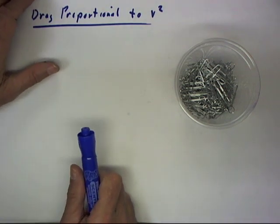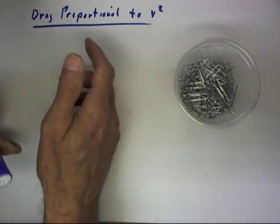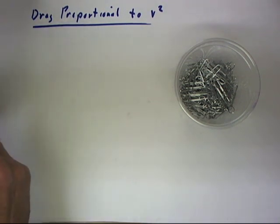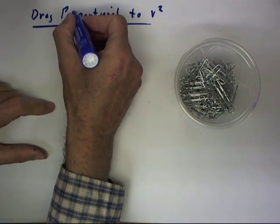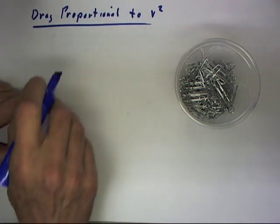Looking at a situation very similar to the preceding, we just make one change. The drag is proportional to v squared.